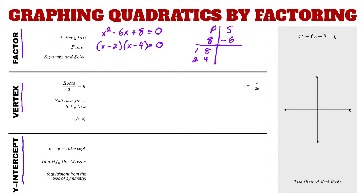The next step is to separate and solve. We take each bracket, set it equal to zero, and solve. Either the first bracket or the second must equal zero, so x equals 2 or x equals 4. At this point we've found our two x-intercepts: 2 and 4 along the x-axis.